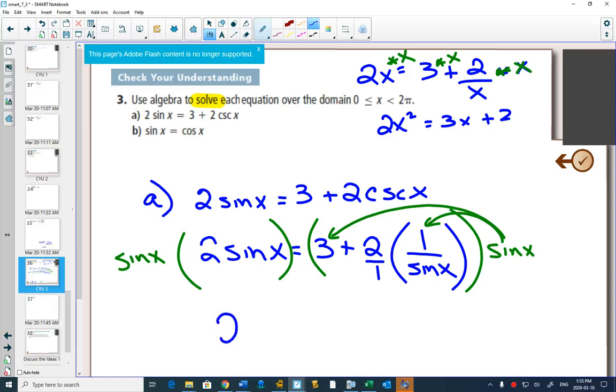So what do we get? We're going to get two sine squared x equals three sine x. Here the sine x's cancel out, plus two. So we have to know how to solve rational equations. Now what kind of equation do we have? Quadratic. So we have to know how to solve quadratic equations.